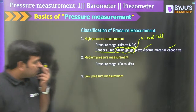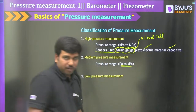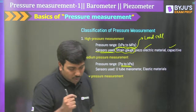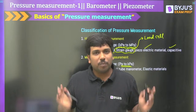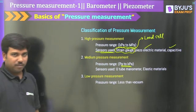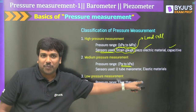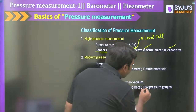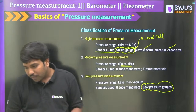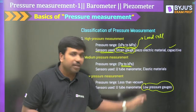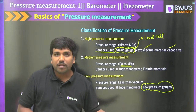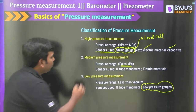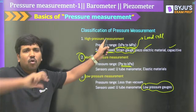Medium pressure measurement ranges from Pascal to kilopascal. Sensors used include U-tube manometer and elastic materials — specifically diaphragms, Bourdon tubes, and other special devices. Low pressure measurement covers even sub-vacuum pressures. Sensors for low pressure include U-tube manometer and low pressure gauges such as thermocouple gauge, Pirani gauge, McLeod gauge, Knudsen gauge, and ionization gauges.